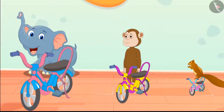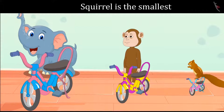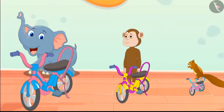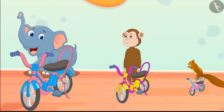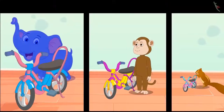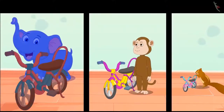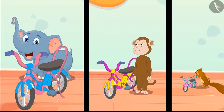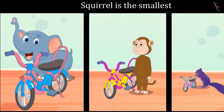So kids, can you tell which is the squirrel's bicycle? You thought right, children. The squirrel is the tiniest among those three animals, and his bicycle is also the smallest. This means the squirrel will get the smallest bicycle. And this is the monkey's bicycle. The elephant is the biggest among the three friends so he took the biggest bicycle, and the squirrel is the smallest so he has taken the shortest bicycle.